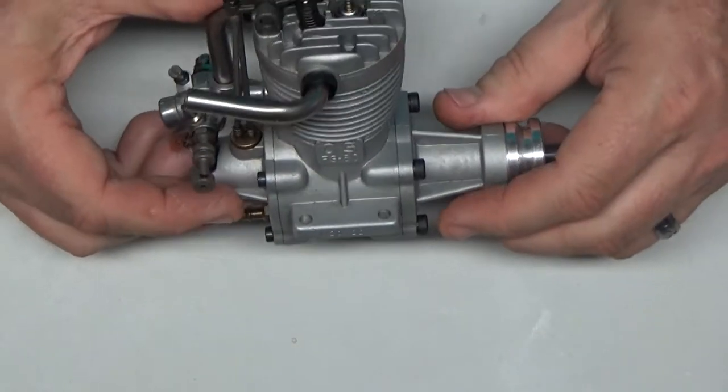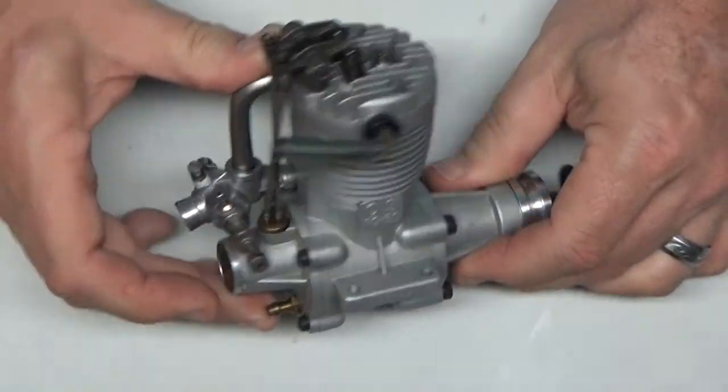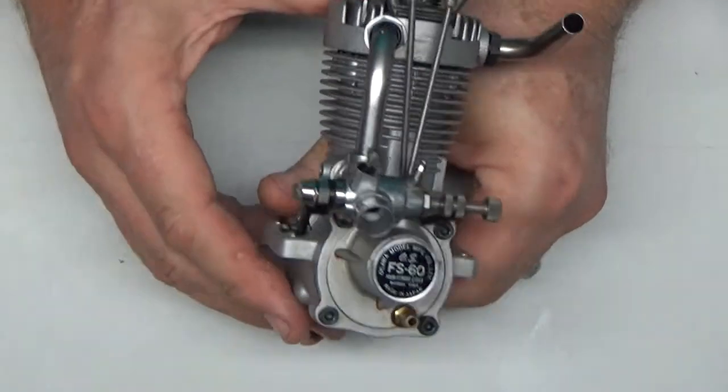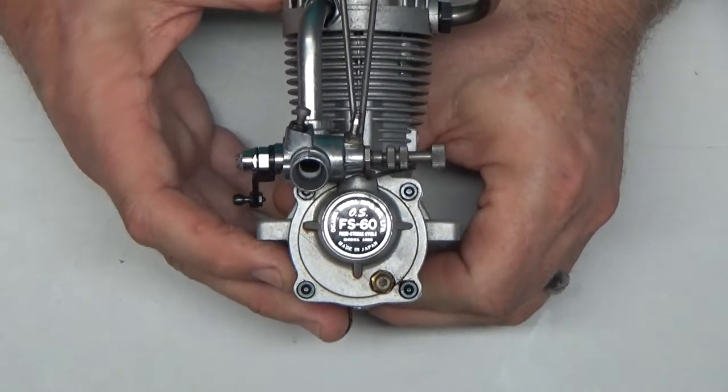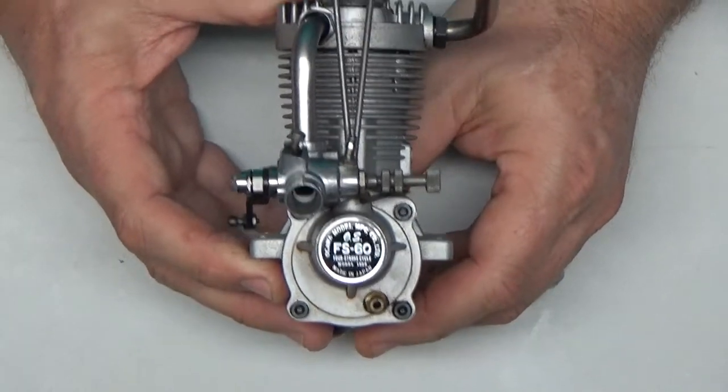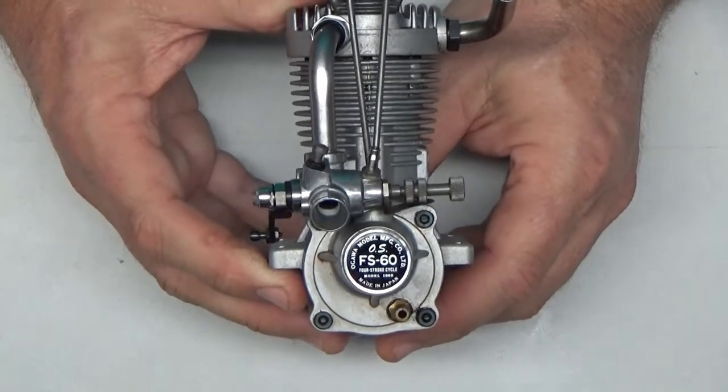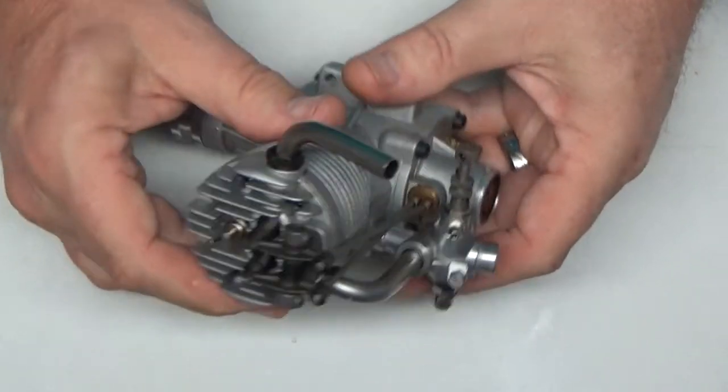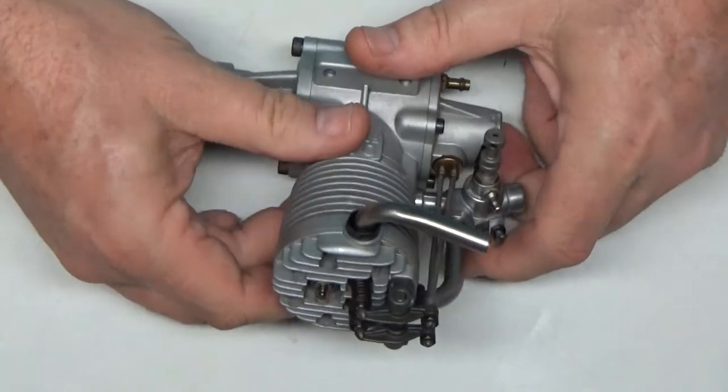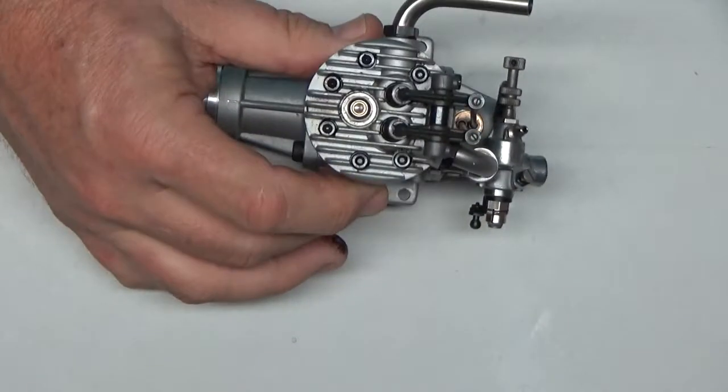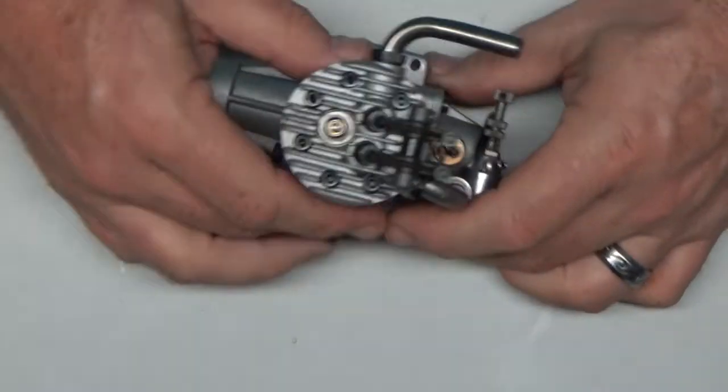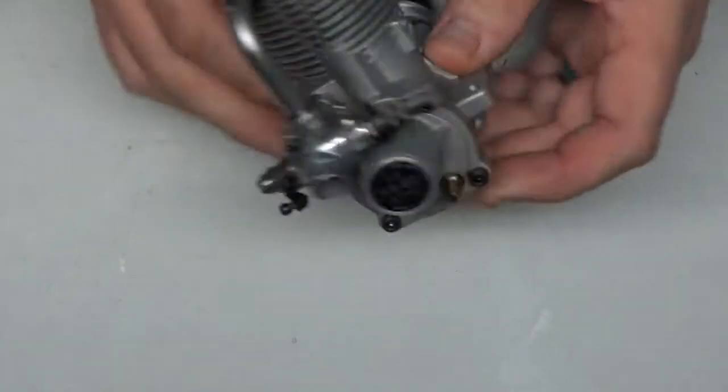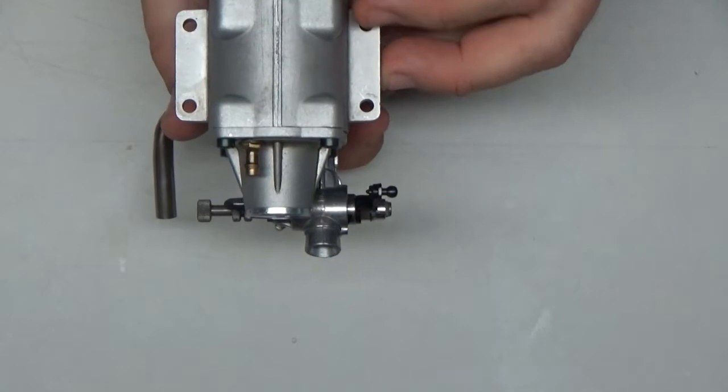But the beautiful thing about this engine is it's new, it's never been run. This is a new in the box engine. The only thing that I was told by the person who sold it to me was that the owner would periodically put a few drops of oil in it to preserve it over time. And to me it looks like, since the mounting template is out, maybe it was actually mounted in an airplane but it's never been run that I can see.